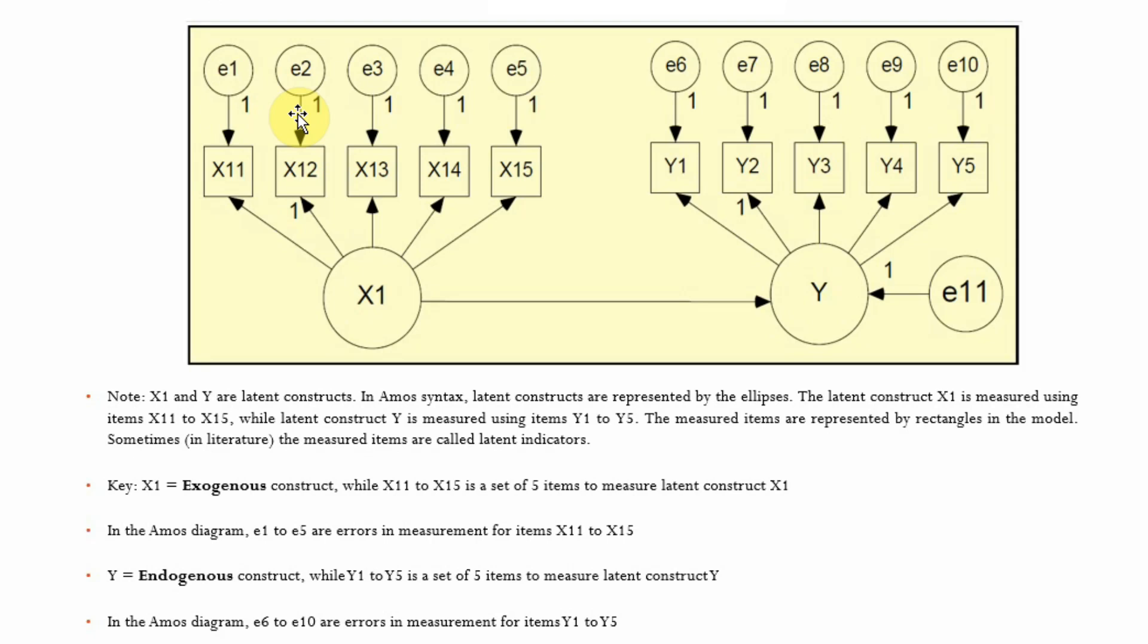The arrows are pointing from your unobservable construct to the indicators, and when we run the model we've got statistical figures here on these arrows—they show factor loading or regression weights or regression coefficients.